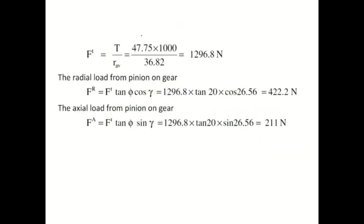Using the torque value, we find F_T = Torque / R_average. The tangential force F_T comes out to approximately 1296 N. Then using F_T, we find: radial force F_R = F_T × tan(φ) × cos(γ), and axial force F_A = F_T × tan(φ) × sin(γ). The final answers for the three forces are approximately 4, 12, and 211 — check exact values by calculation.